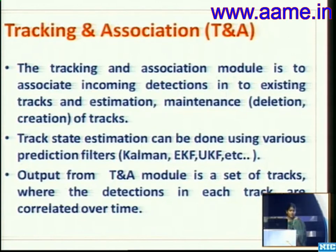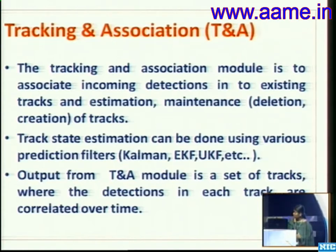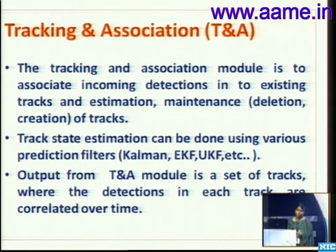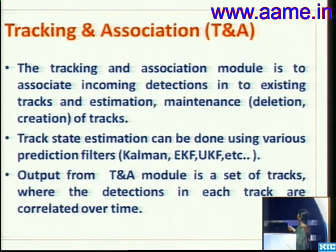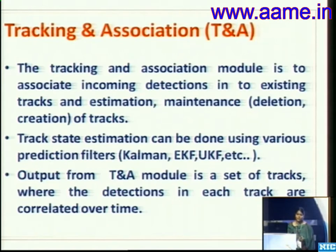The tracking and association phase is very important. Every detection must be spatially associated with its tracker, and position and velocity of the target must be estimated. A good choice of prediction filters is required — non-linear optimal filters such as Kalman, extended Kalman, or unscented Kalman filter. The output of this module is a set of tracks correlated over time. Track management involves maintaining existing tracks, creating new tracks, deleting tracks, and handling missing detections.